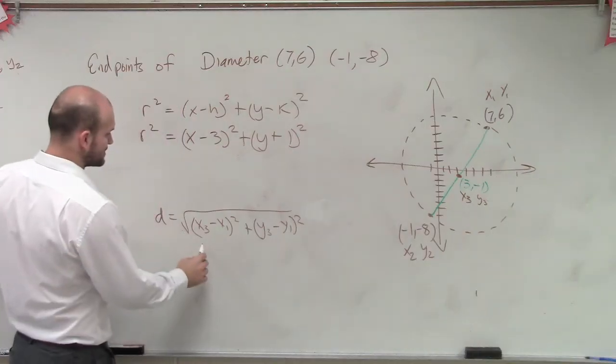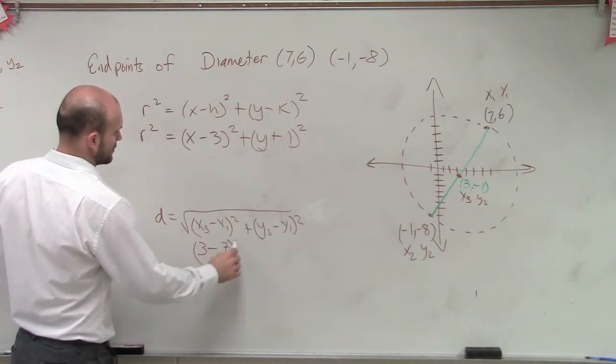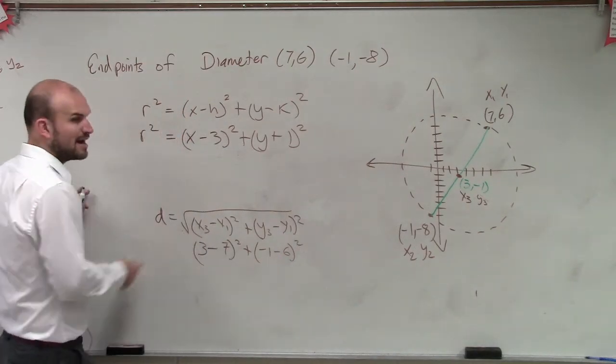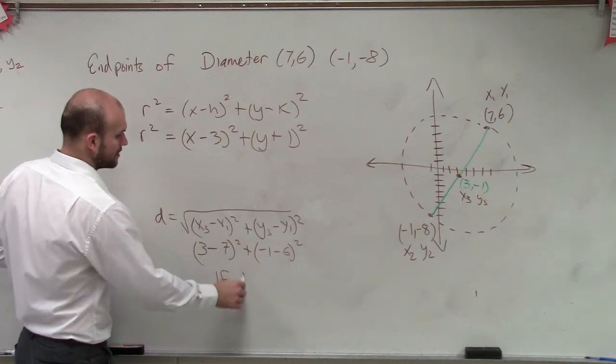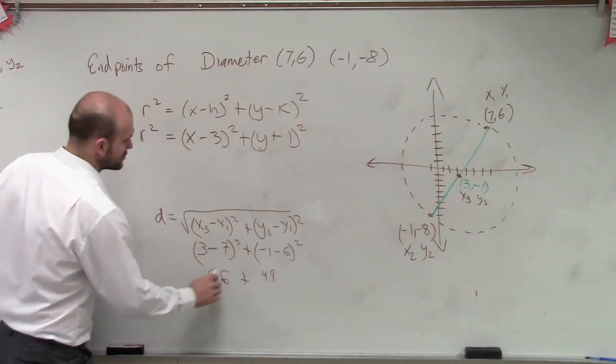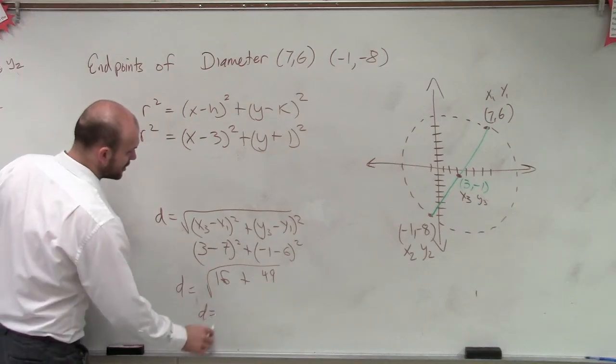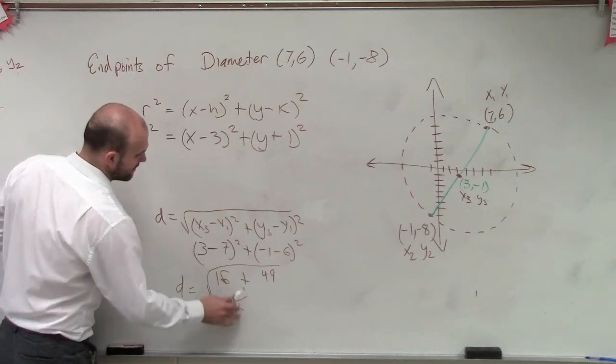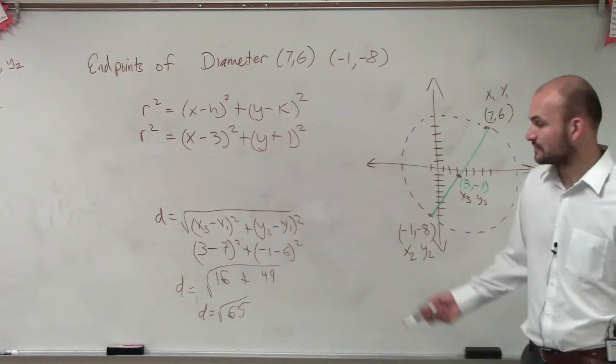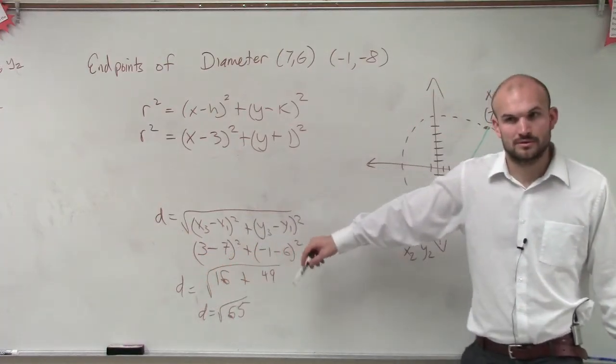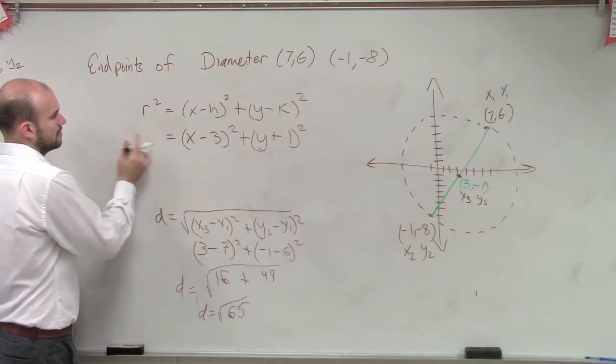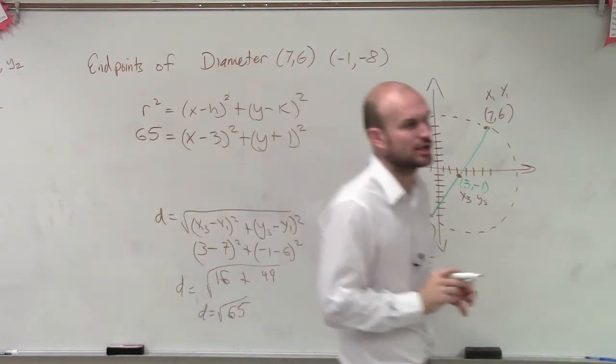So now, what is my x₃? x₃ is 3 minus x₁, which is 7, squared, plus y₃, which is negative 1, minus 6 squared. So 3 minus 7 is negative 4. Negative 4 squared is 16, plus negative 1 minus 6 is negative 7. Negative 7 squared is 49, and that's the square root of d equals. So therefore, d equals the square root of 65. Yes? So now, d equals the square root of 65. Well, if d equals the square root of 65, what does d squared equal? 65. So therefore, we can say that r² is now equal to 65. So now, we have just written our equation of our circle.